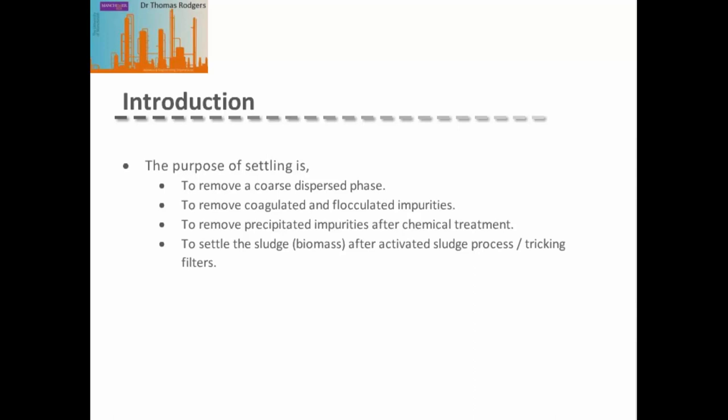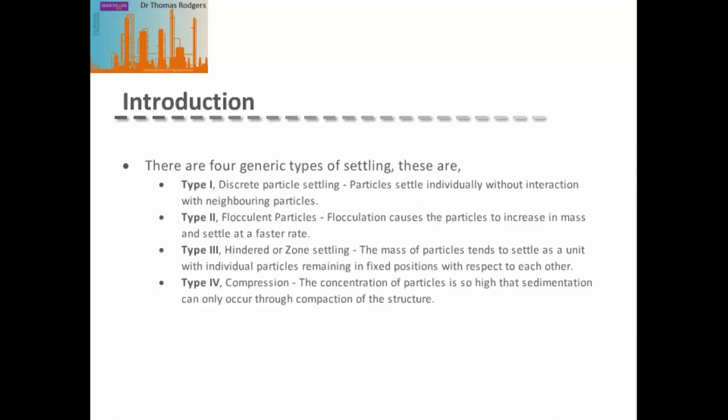Gravity settling is used a lot in the treatment of waste water. There are four generic types of settling. Type 1 is discrete particle settling, where the particles settle individually without any interaction with neighbouring particles — this tends to happen only for very dilute systems. Type 2 is flocculent particle settling, where flocculation causes particles to stick together and increase in mass as they settle, so they start to settle at a faster rate. Type 3 is hindered or zone settling, where the mass of particles tends to settle as a unit with individual particles remaining in a fixed position relative to each other. Type 4 is compressive settling, where the concentration of particles is so high that sedimentation can only occur through the structure being compacted by the weight of the particles above.